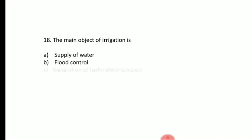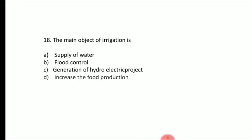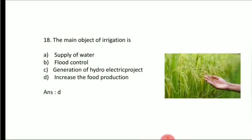The main object of irrigation is — Option A: supply of water, Option B: flood control, Option C: generation of hydroelectric power, Option D: increase food production. Answer is Option D, increase the food production. The main objective of irrigation is to increase food production. That's all we have discussed in this video.